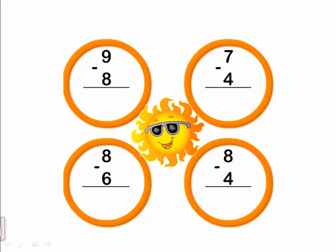Let's go to the next one: nine minus eight. Which one is the smaller? Eight. Let's count after eight till nine. After eight: nine. So how many are left? One. Nine minus eight equals one.